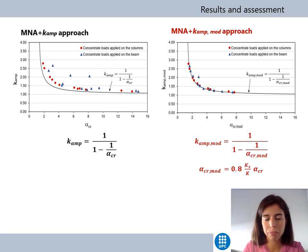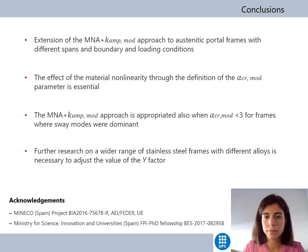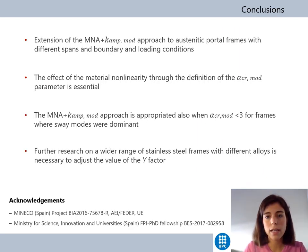In one case, the 0.8 factor is quite unsafe. In this case, the collapse of the frame occurs due to a plastic collapse of the beam. Therefore, it can be concluded that it is only appropriate to use the modified k-amp approach in cases where sway is dominant.